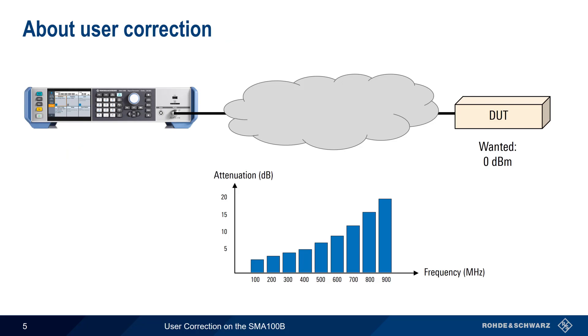User correction is implemented by using a table that maps frequency to a correction value. The generator looks in the table and changes its output power by the amount indicated for the current frequency. This allows the generator to provide a consistent power level to the device under test over a wide frequency range.